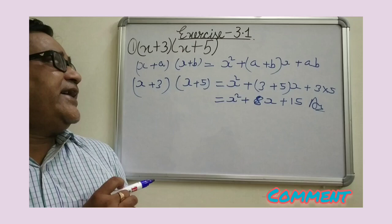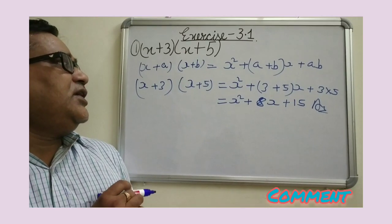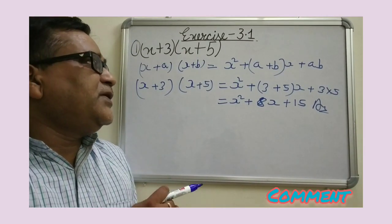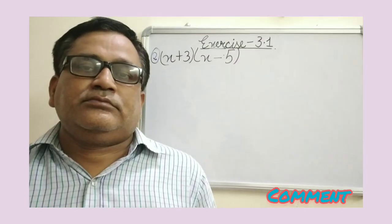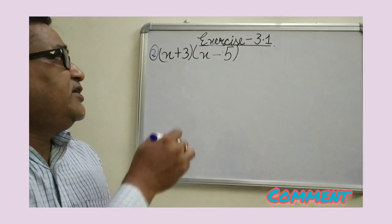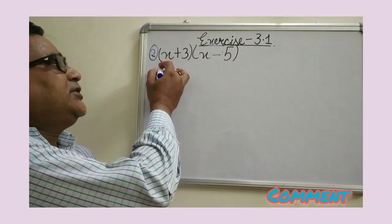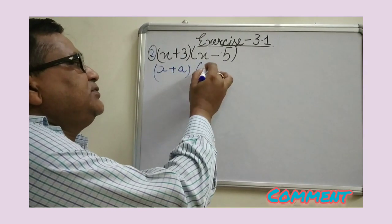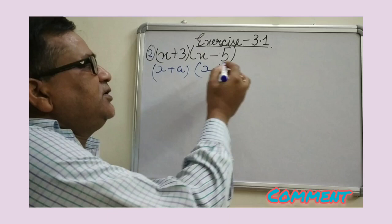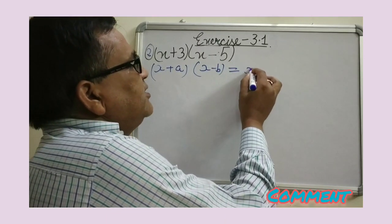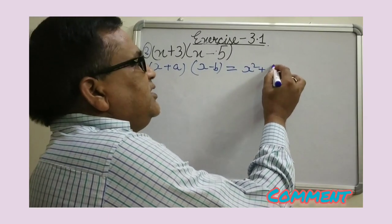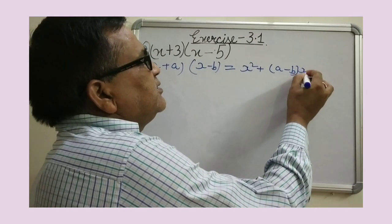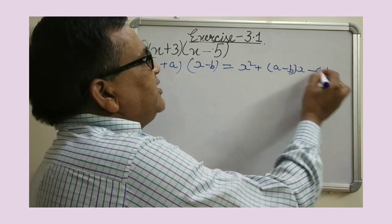So this identity is based on x plus a into x plus b equals x squared plus a plus b into x plus ab. The next identity is based on x plus a into x minus b equals x squared plus a minus b into x minus ab.